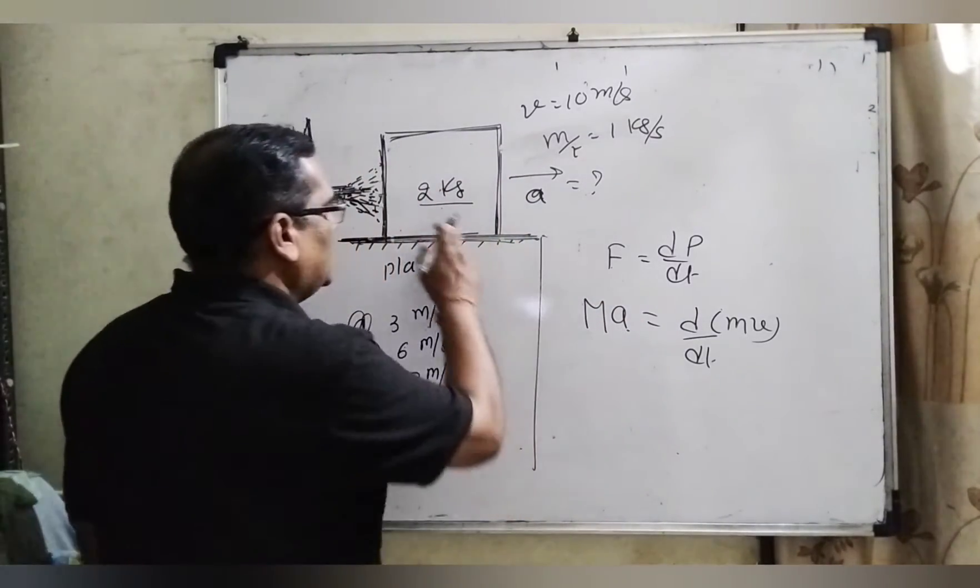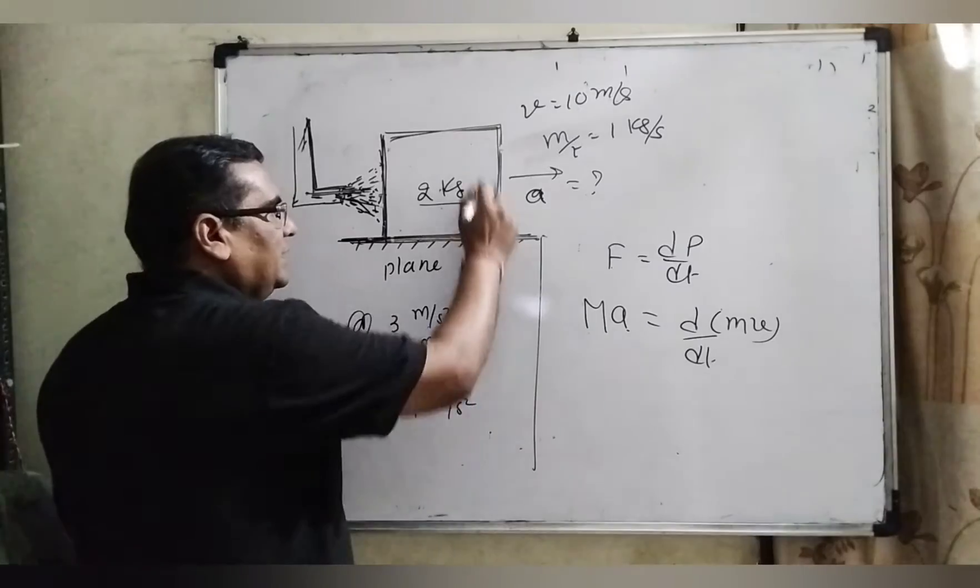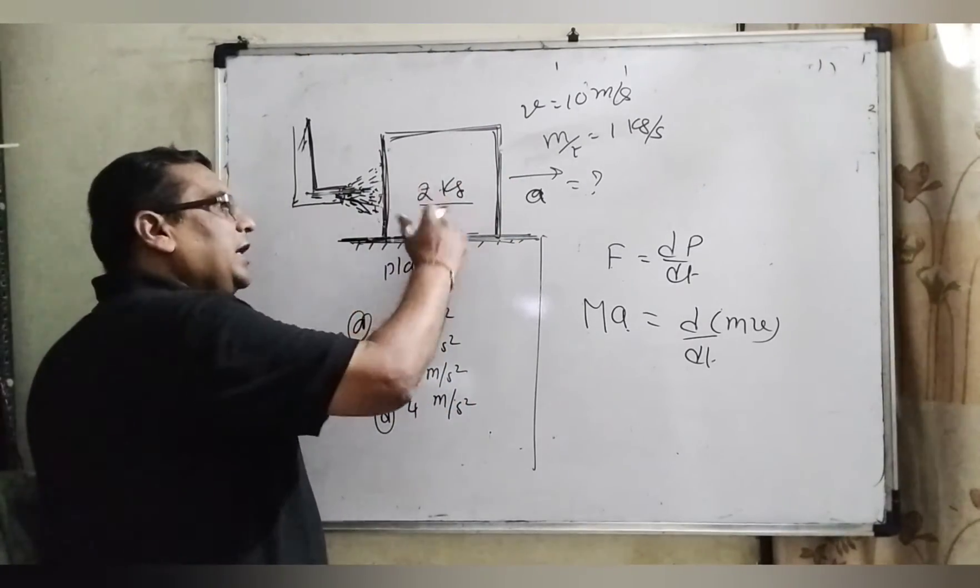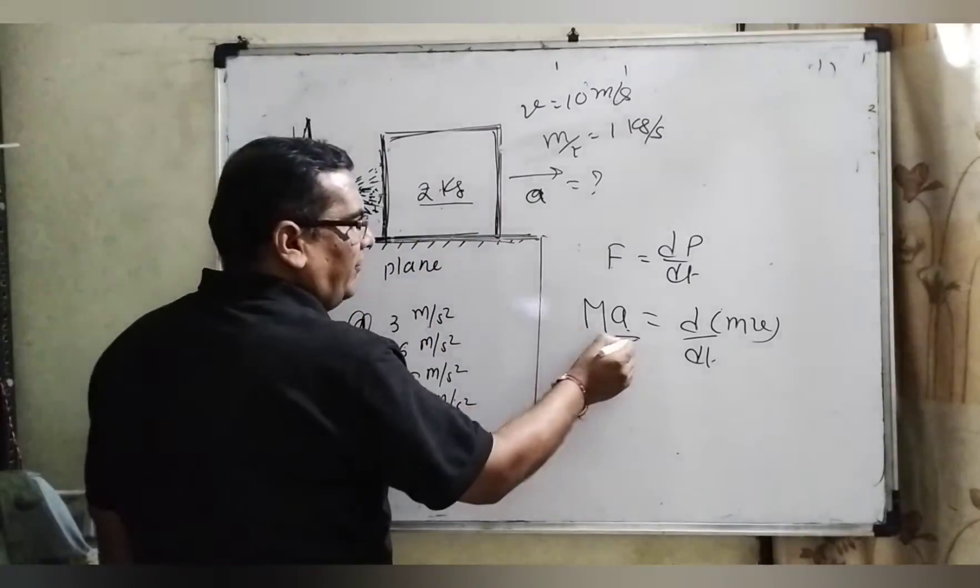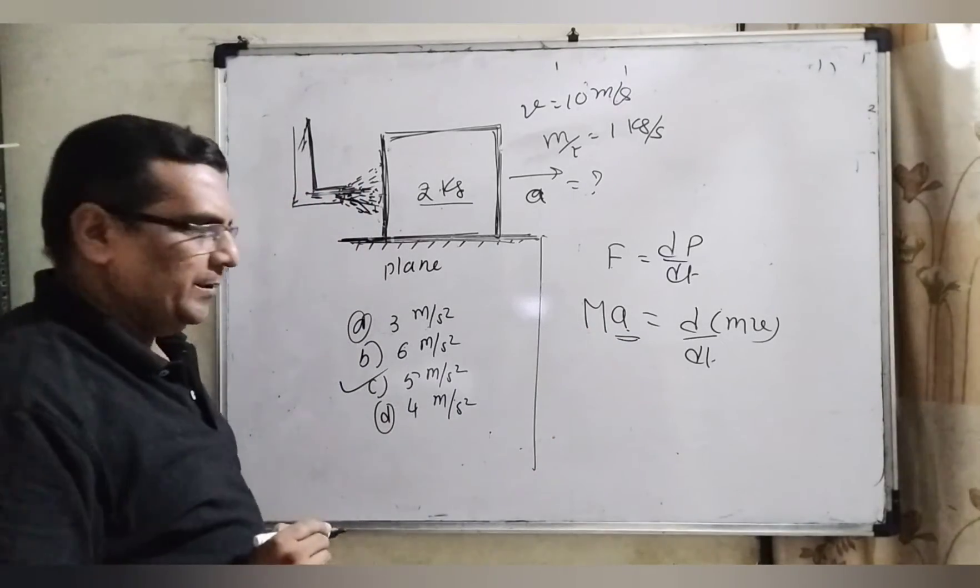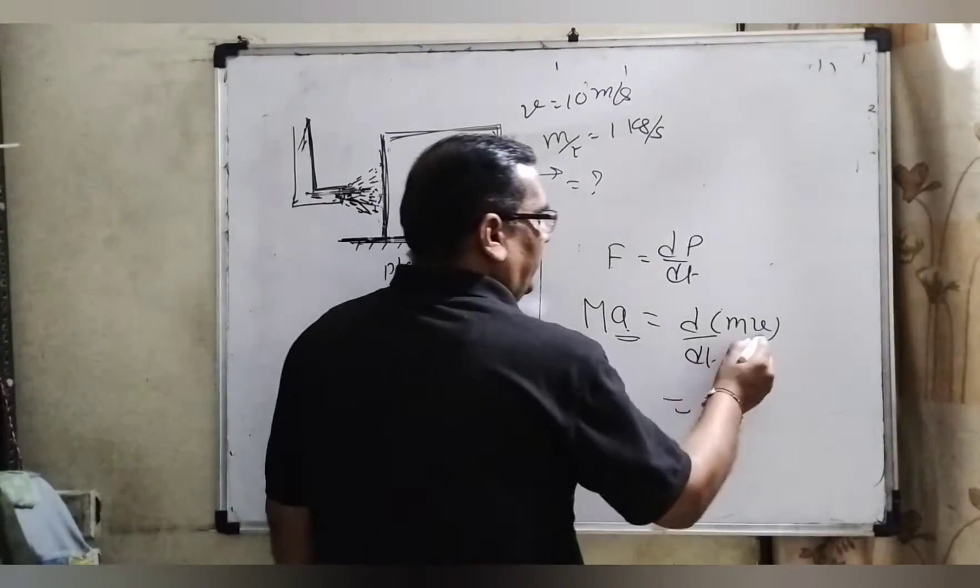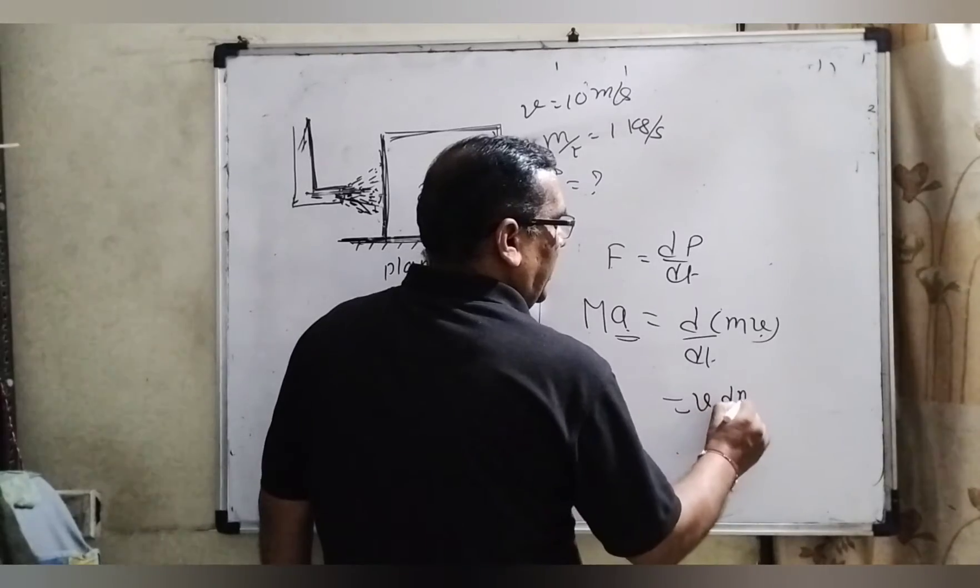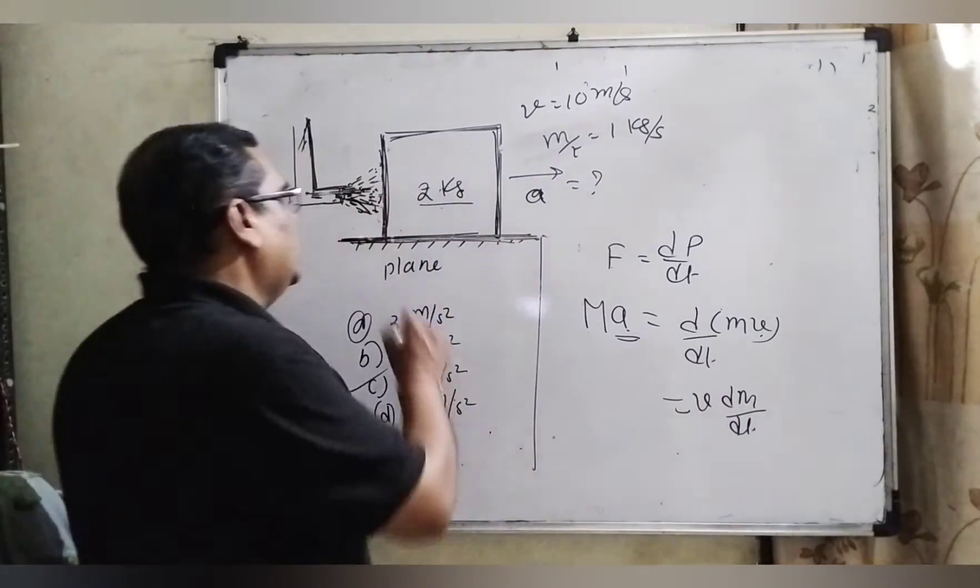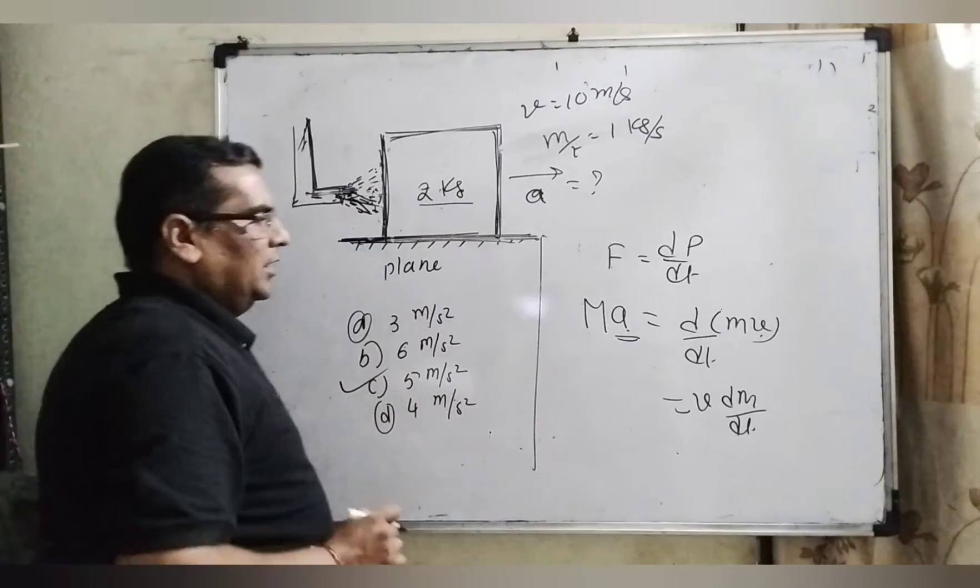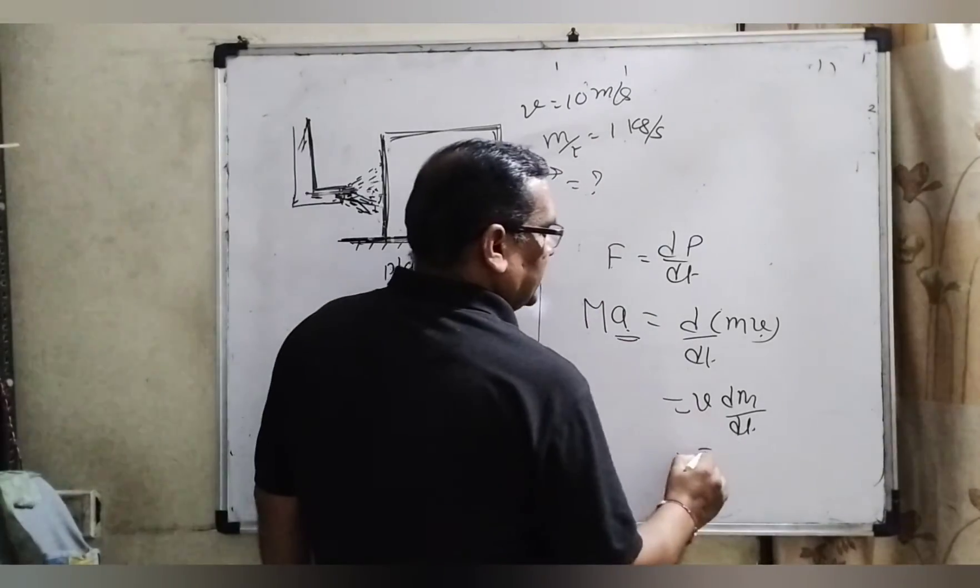Here M is the mass of the block and A is the acceleration. When the jet applies force, it accelerates the block, and we have to find out this acceleration. So V is a constant, and dm/dt is the rate of change of mass released by this jet, which is given as 1 kilogram per second.